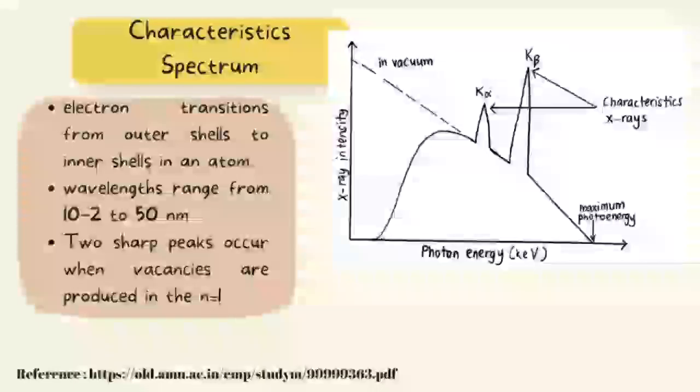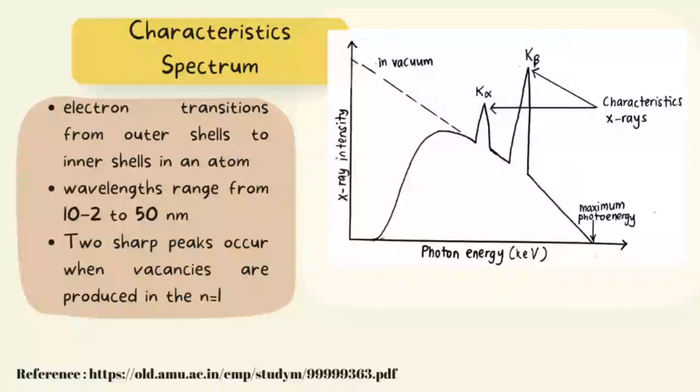Let's look at characteristic spectrum, which results from electron transitions from outer shells to inner shells in an atom. The wavelengths of the spectra that can be observed are in the range of 10 to the -2 to 50 nanometers. These spectrums are generally emitted from heavy elements when their electrons transition between the lower atomic energy levels. The elements are significant in observing the spectra.